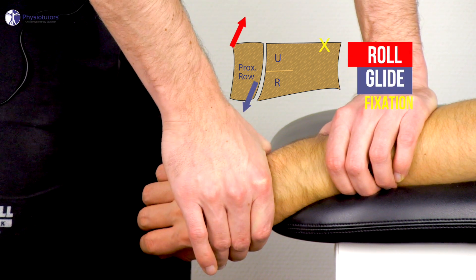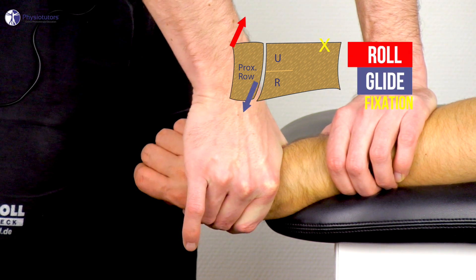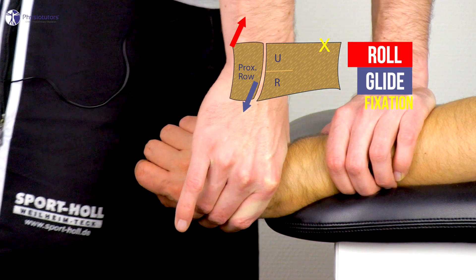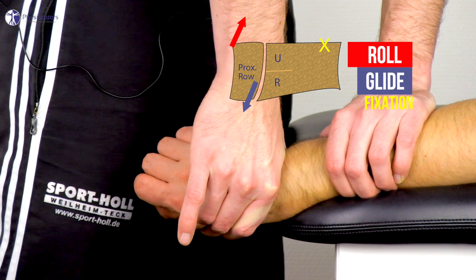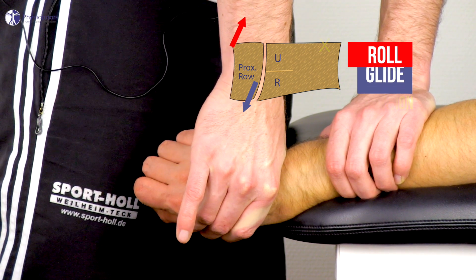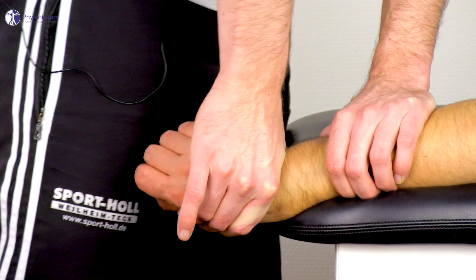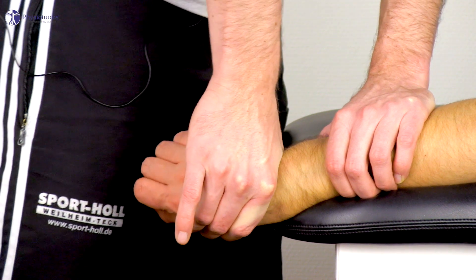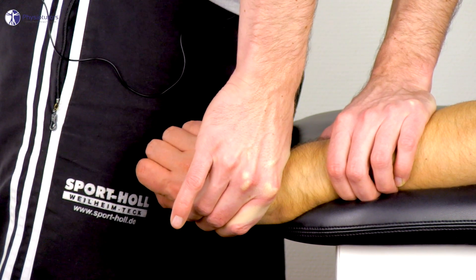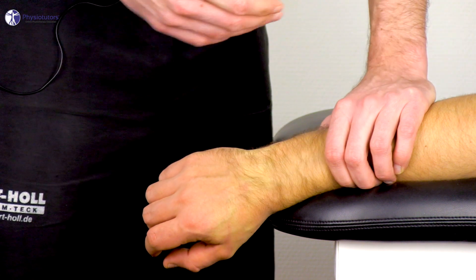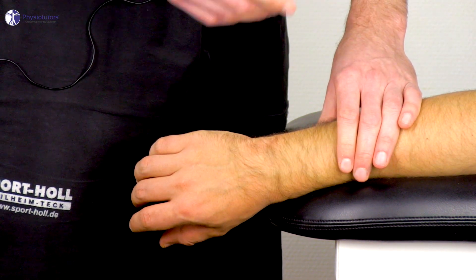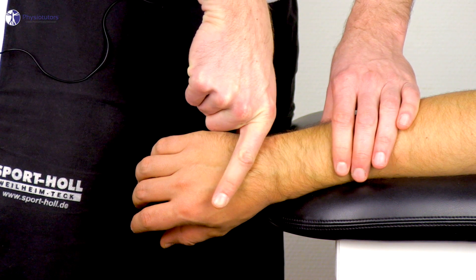Now roll into ulnar and proximal direction and at the same time perform the glide by pushing the proximal intercarpal row into radial and distal direction. The distal component is added as the distal radius reaches slightly more distal than the ulnar.